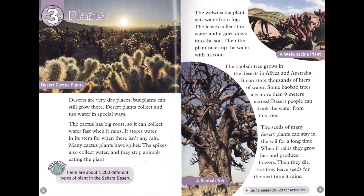The baobab tree grows in the deserts in Africa and Australia. It can store thousands of liters of water. Some baobab trees are more than nine meters across, and desert people can drink the water from this tree. The seeds of many desert plants can stay in the soil for a long time. When it rains, they grow fast and produce flowers, then die, leaving seeds for the next time it rains.